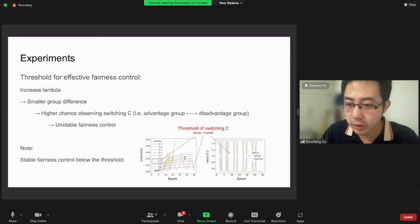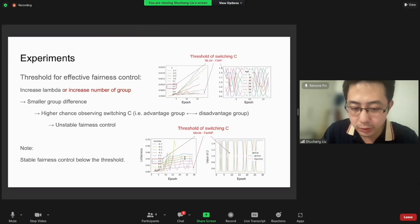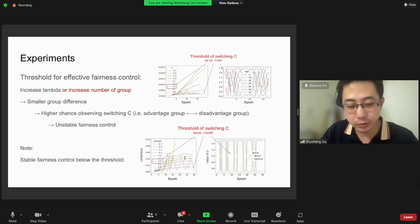This problem may become even worse when you have more than two groups involved, since any two of the groups becoming too close might switch. As a note, stable fairness control happens only under the switching threshold.